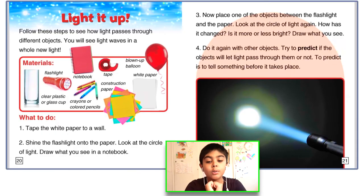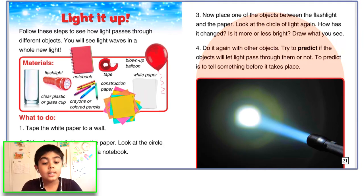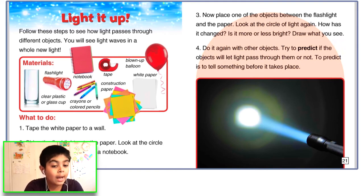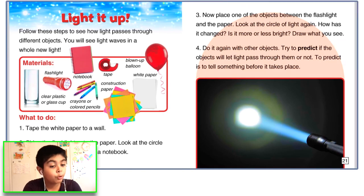Light it up. Follow these steps to see how light passes through different objects — you will see light waves in a whole new light. Tape the white paper to a wall. Shine the flashlight onto the paper and look at the circle of light. Draw what you see in a notebook. Now place one of the objects between the flashlight and the paper. Look at the circle of light again — how has it changed? Is it more or less bright? Draw what you see. Do it again with other objects. Try to predict if the object will let light pass through it or not. To predict means to tell something before it takes place.